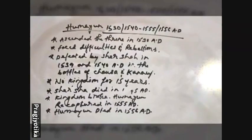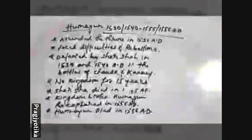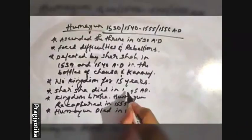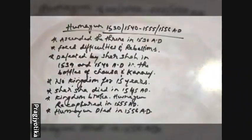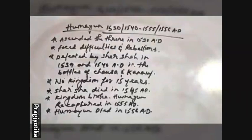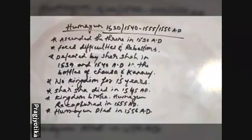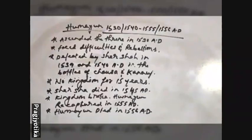Sher Shah Suri died in 1545 AD. After his death, his sons sat on the throne, but they were weak. As a result, the kingdom created by Sher Shah started to break down. Taking this advantage, Humayun again came and recaptured Delhi in the year 1555 AD. But he could not rule for long this time, and he died the very next year, in 1556.